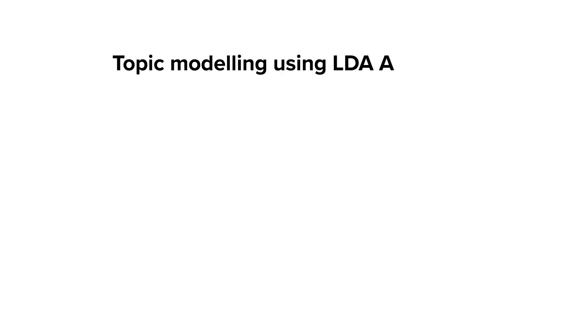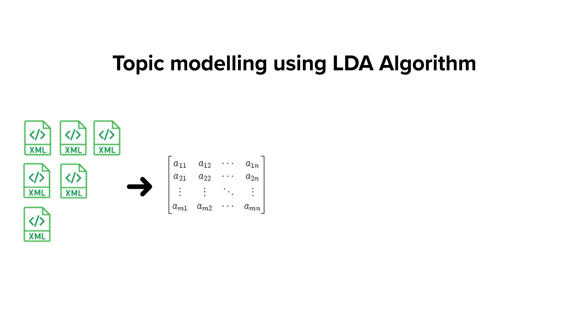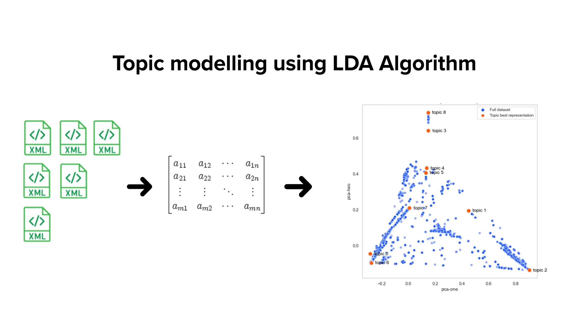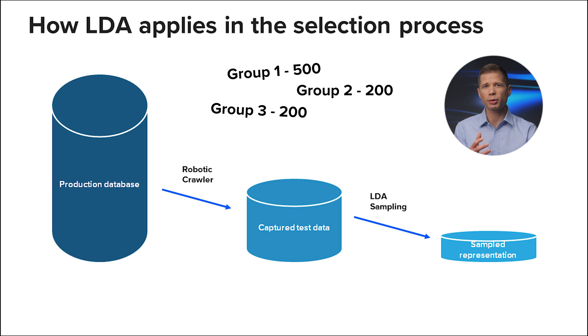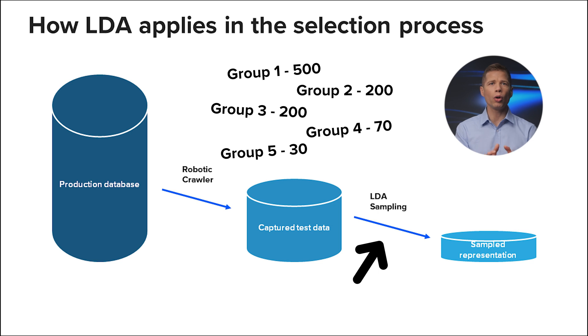The algorithm first checks the messages and creates groups of topics representing different sets of messages. The LDA algorithm makes sure that you will get representations of the message from each of the groups and topics. It means that if out of your thousand messages you have 5 groups with 500, 200, 200, 270, and 30 messages, you can be sure that during sampling all groups will be represented, so there is no risk that the group with the smaller number of messages will be skipped.